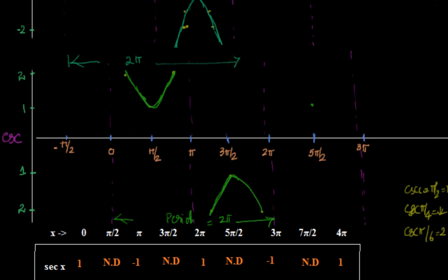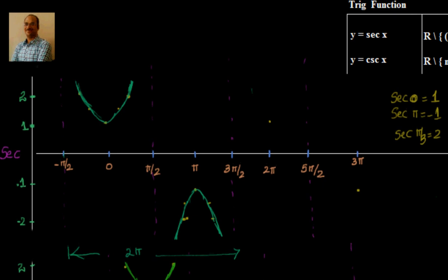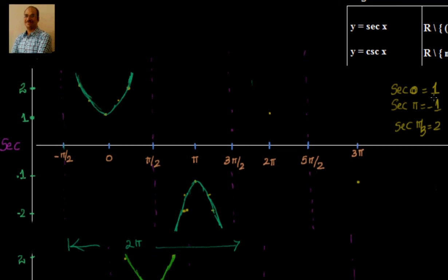So the period of sin, cos, cosecant, secant is 2π. But whereas for tan, it is π. Because tan is positive in first quadrant and third quadrant.